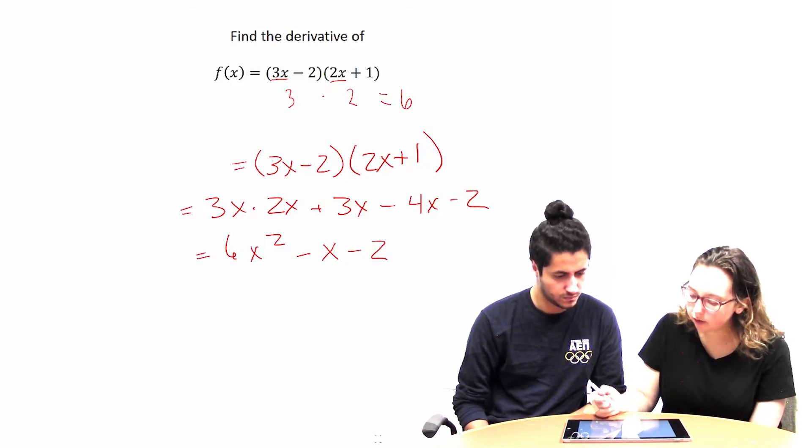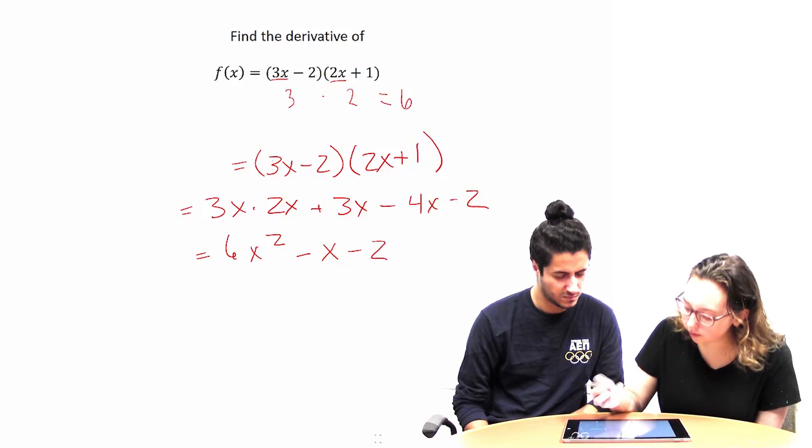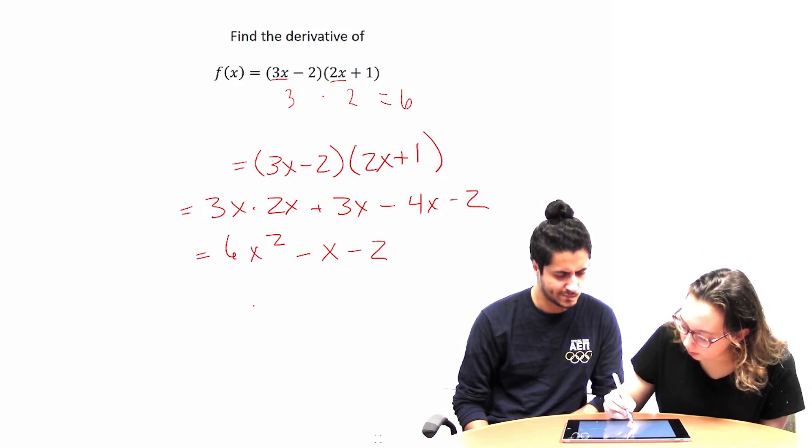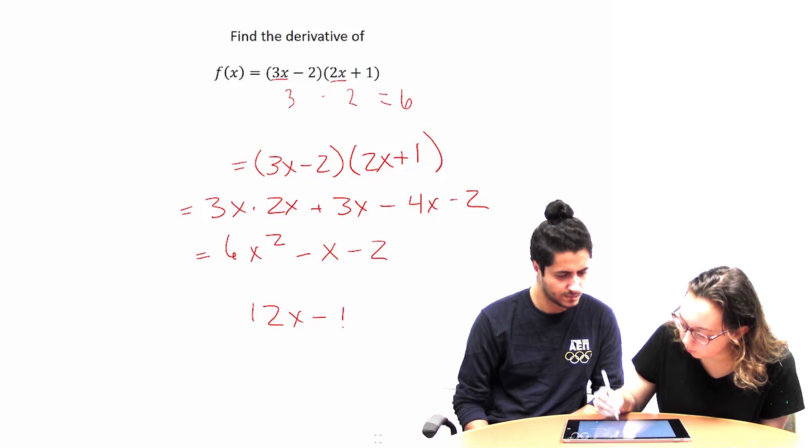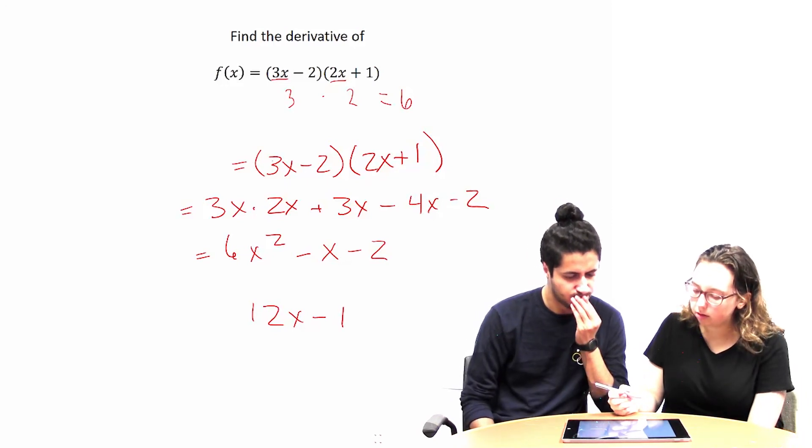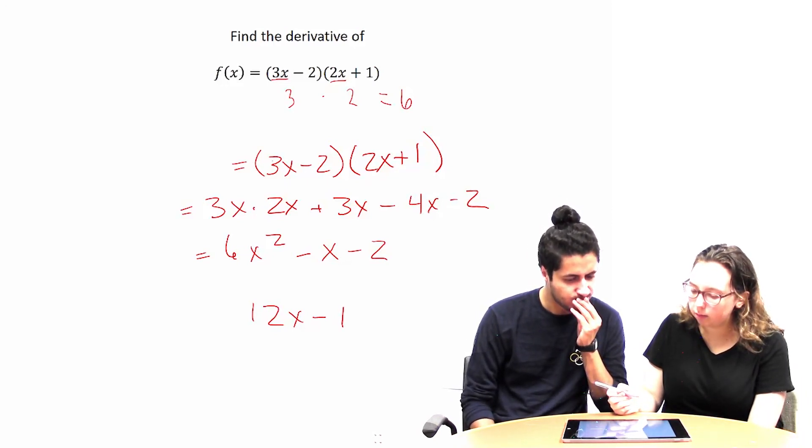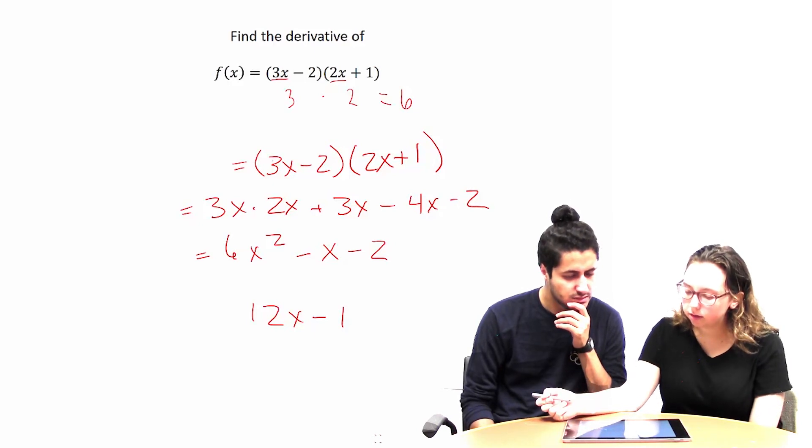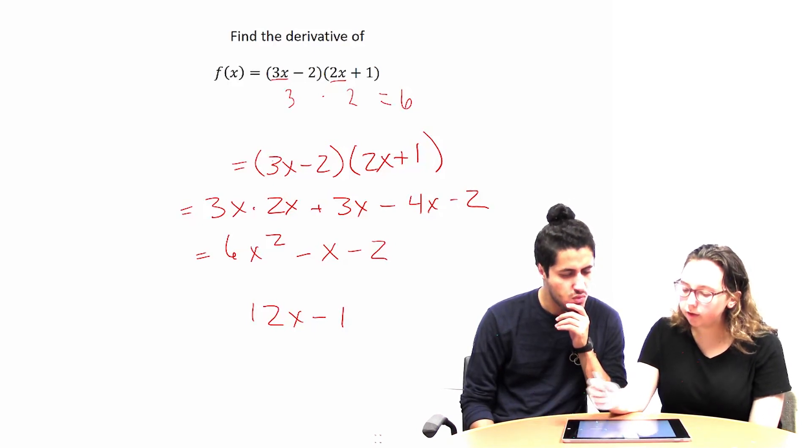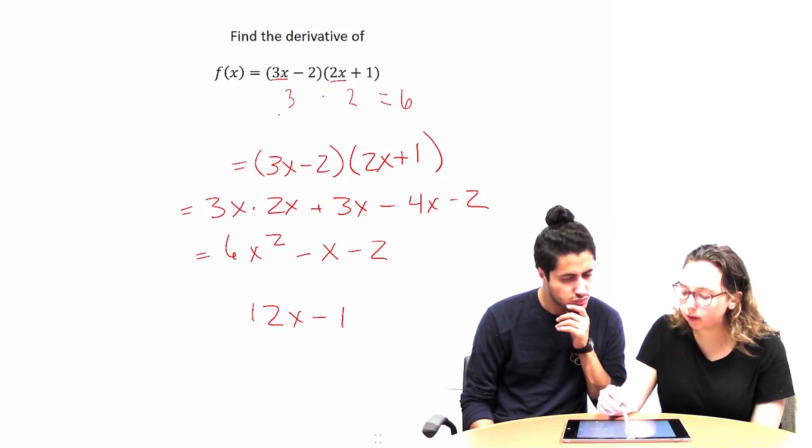If we take the derivative of this, we end up getting 12x minus one, which is not the same as what I got as six. So I feel like there's something wrong with doing it this way.